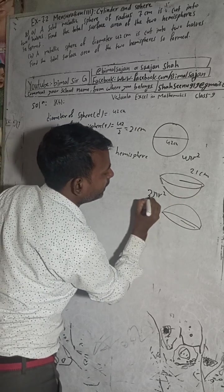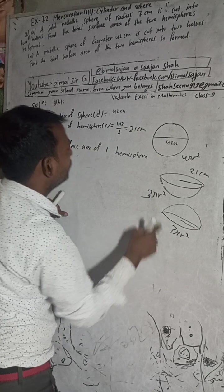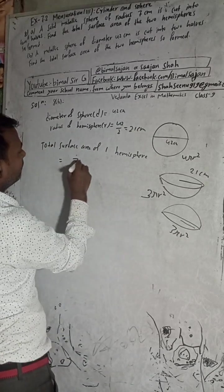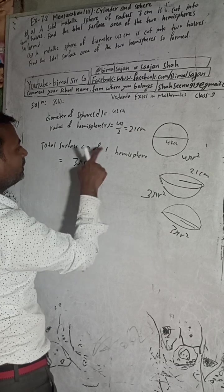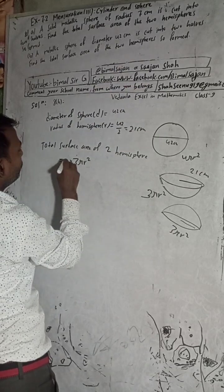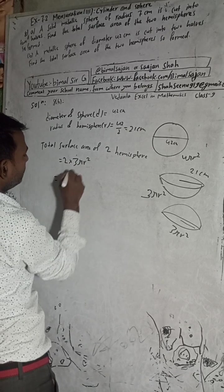The surface area of one hemisphere will be 3πr², and we have to find for two hemispheres. So we write 2 and multiply, which gives us 6πr². This will be 6 into π, which is 22 by 7, into r².